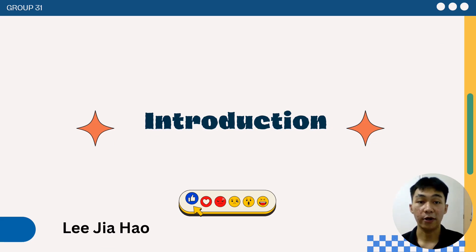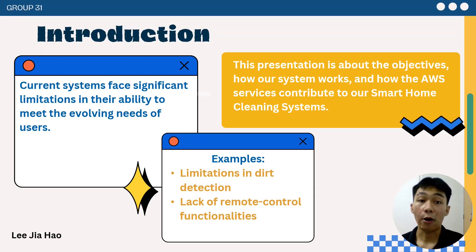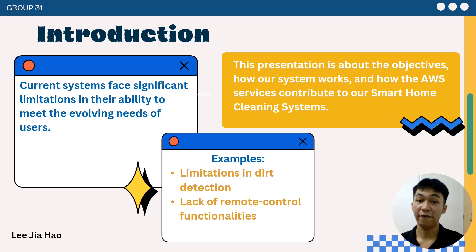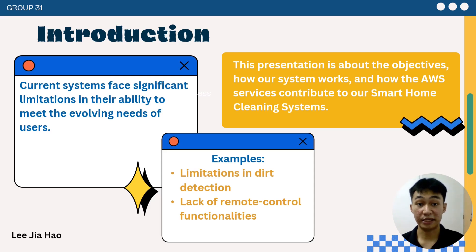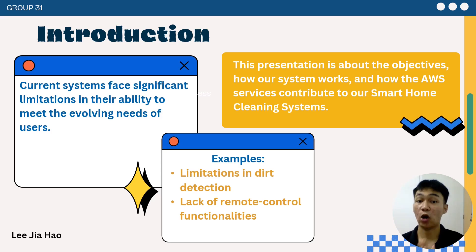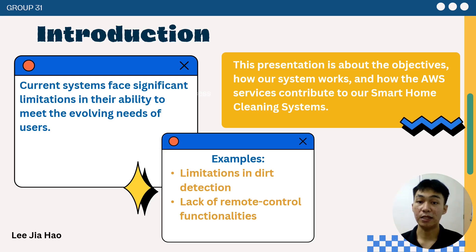The first part of our presentation will be the Introduction. Our group decided to present a Smart Home Cleaning System because current systems face significant limitations in their ability to meet the evolving needs of users. For example, they have limitations in dirt detection and lack remote control functionalities, which limits flexibility and convenience. This presentation will cover the Problem Statement, how our system works, and how AWS services contribute to our Smart Home Cleaning System.